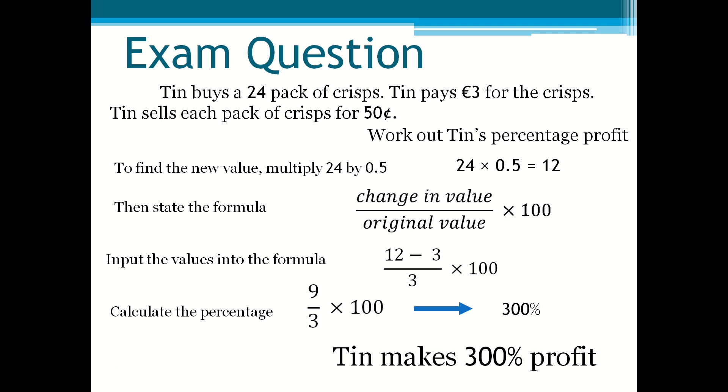300% seems like it's exaggerated, but 300% means that Tin made three times as much as he paid for the crisps initially.